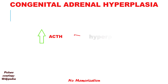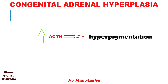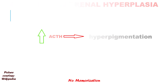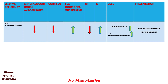This high level of ACTH will cause skin hyperpigmentation, like in primary adrenal insufficiency. Let's start with the first one, 21-hydroxylase enzyme deficiency. What you need to do is write the letter M for mineralocorticoid and the letter T for testosterone or sex hormone, M before the letter T. Then write number 2 below M and number 1 below T — this is 2 and 1 because we are dealing with 21-hydroxylase. Please be careful, do not flip it. Now we need to decorate this a bit.